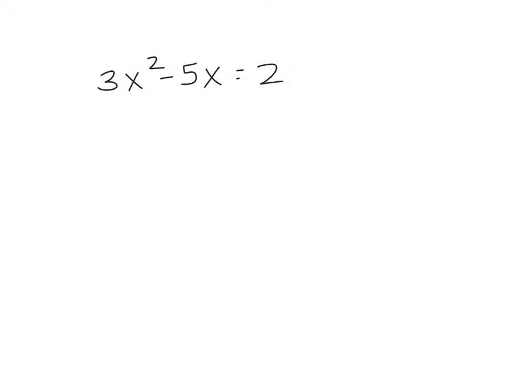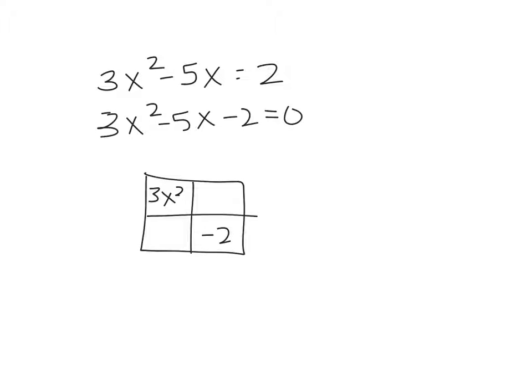Okay, so here's one more example. And again, when I'm looking at this, I'm noticing that it's almost in standard form, but not quite. And so my first try is going to be to factor. But before I can do that, I need to make sure I get that full standard form. So I'm going to subtract the 2 over to the other side. So now I do have it in standard form. And in order to factor, I'm going to draw my area model. So here's my 3x squared, here's my negative 2, and I know that this box and this box need to sum to negative 5x.